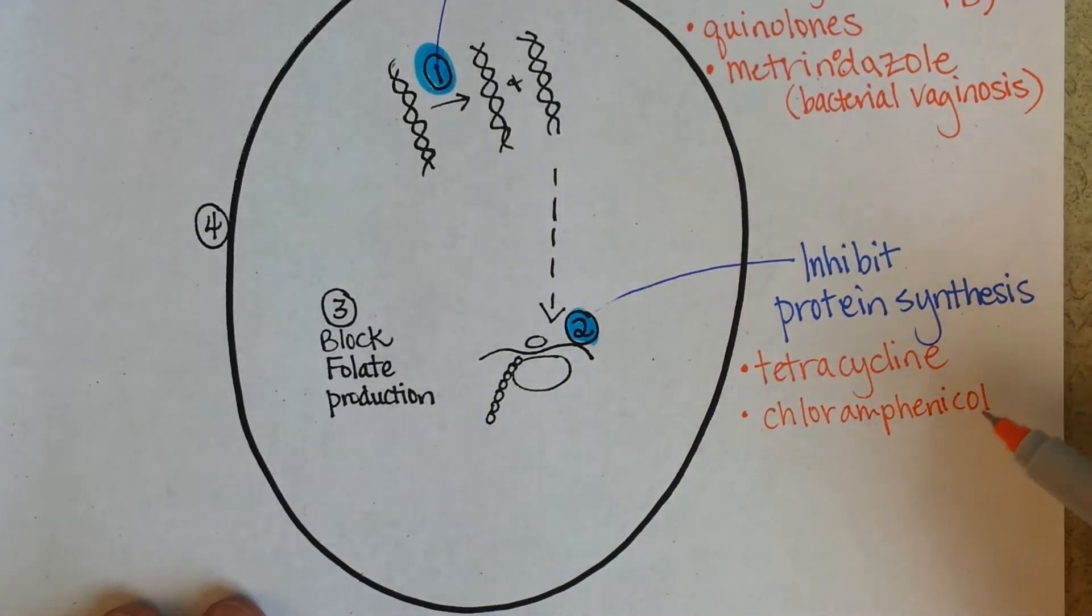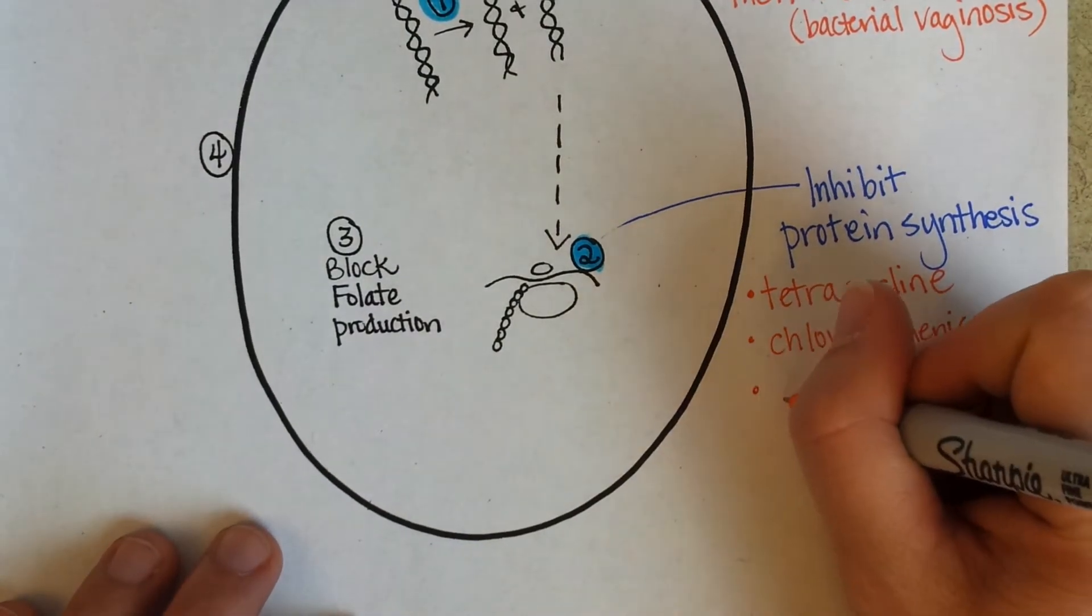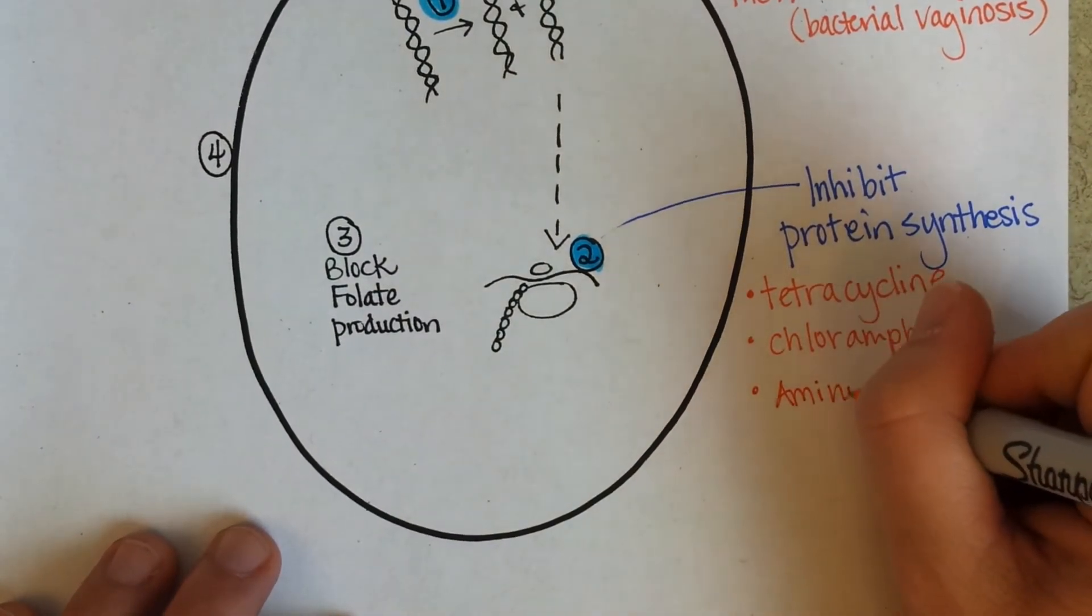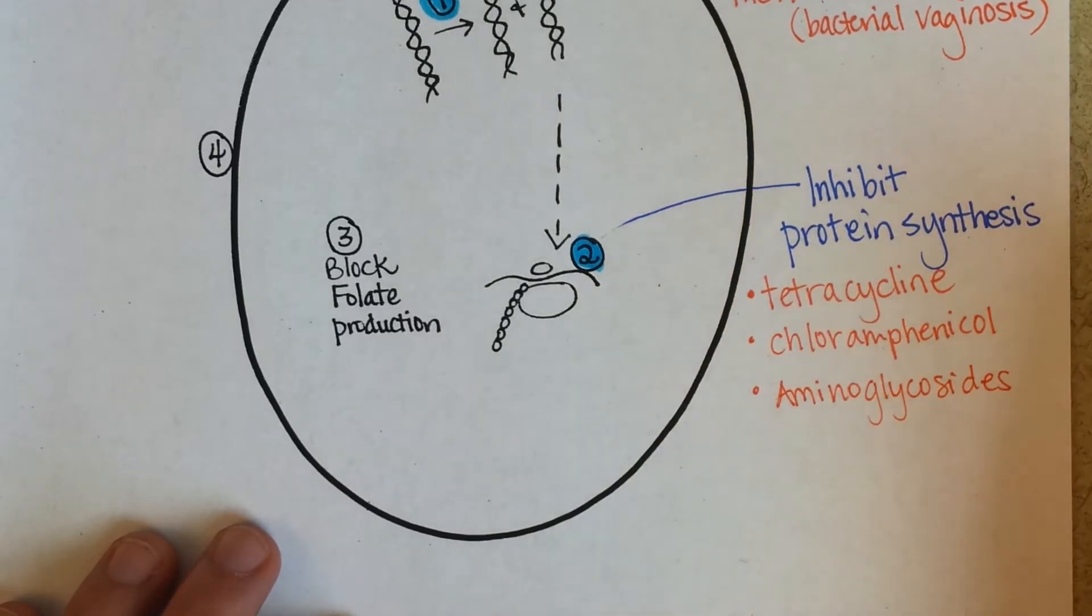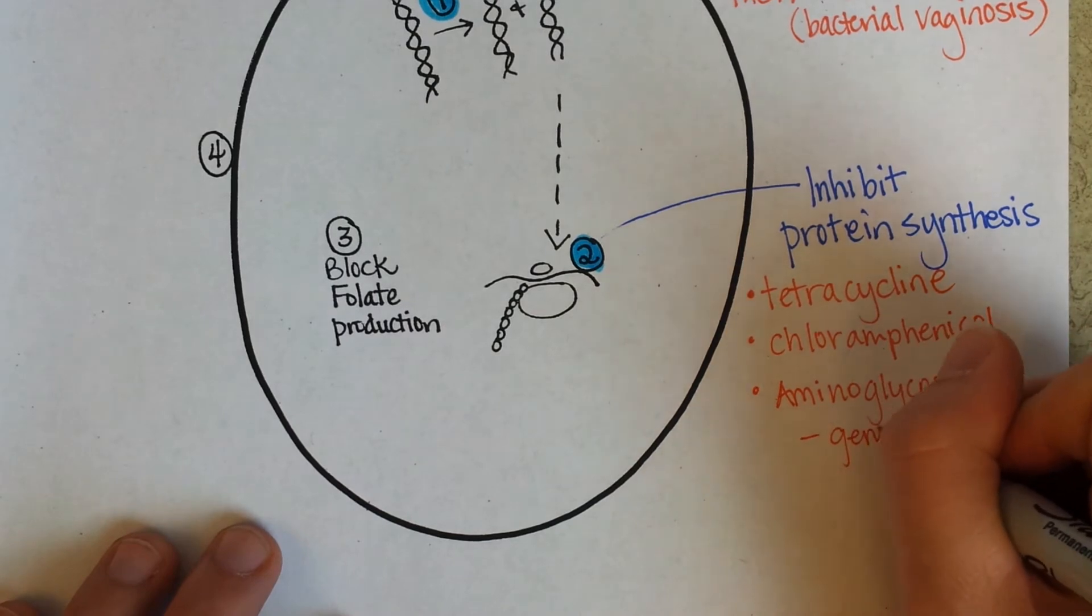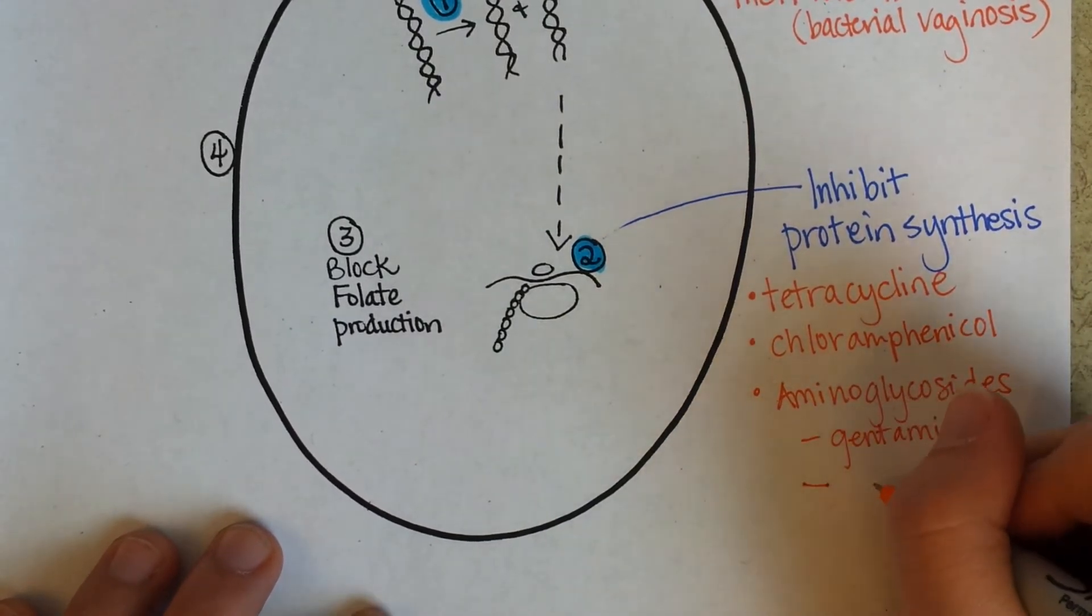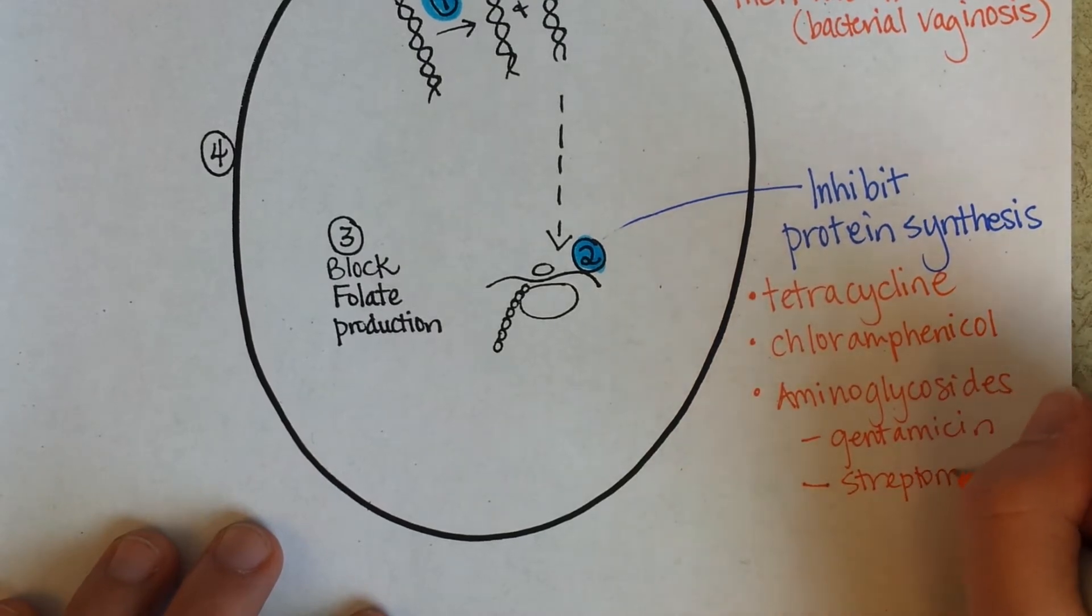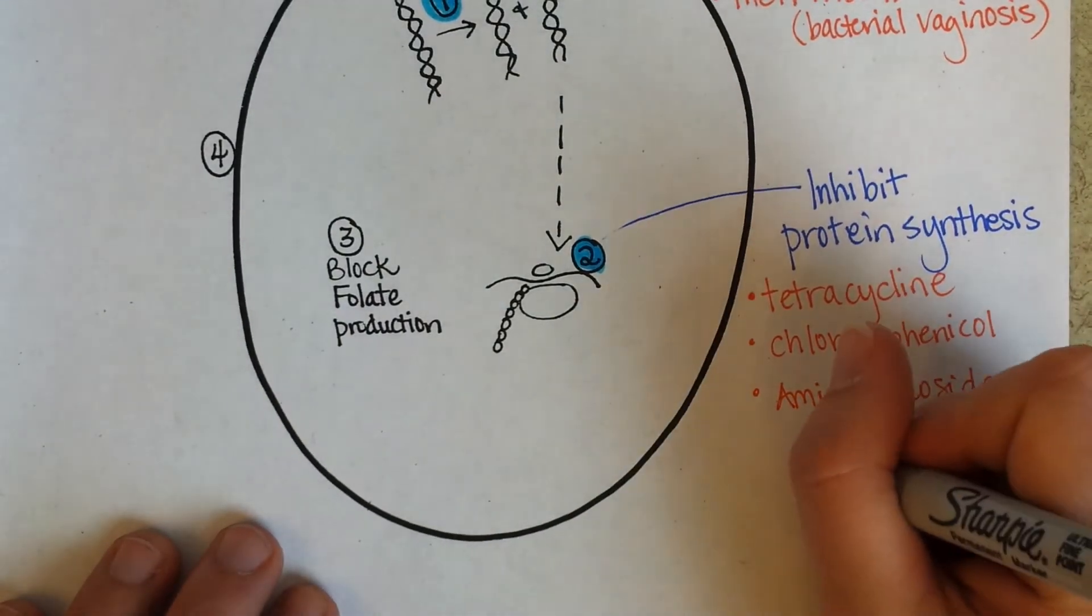...is another antibiotic that works by inhibiting protein synthesis. And then the very important group of aminoglycosides. Aminoglycosides include, among others, but some that will list: gentamicin, streptomycin. So those are a couple...